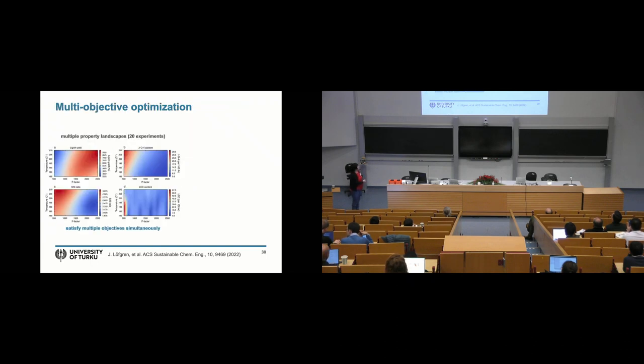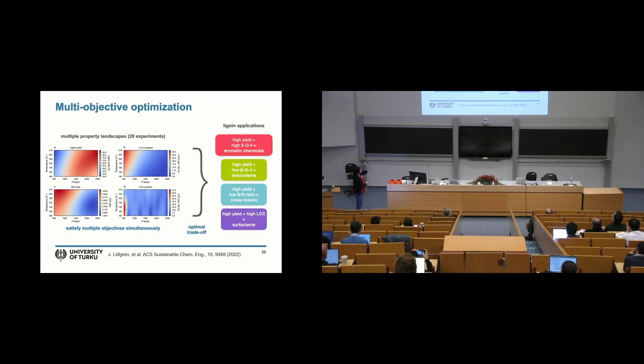While we were maximizing yield, we were also checking for different kinds of lignin chemistries. So there are these yield surrogate models, beta-O-4 content surrogate models, SG ratio, different functional groups, hydrocarbons. And now the question was how do we satisfy multiple objectives simultaneously? So we did then multi-objective optimization to try to find maximum yield but also maximum beta-O-4 content. This is good for aromatic chemical lignins or maximum yield and low beta-O-4 content. This is for the antioxidants and so on and so forth.